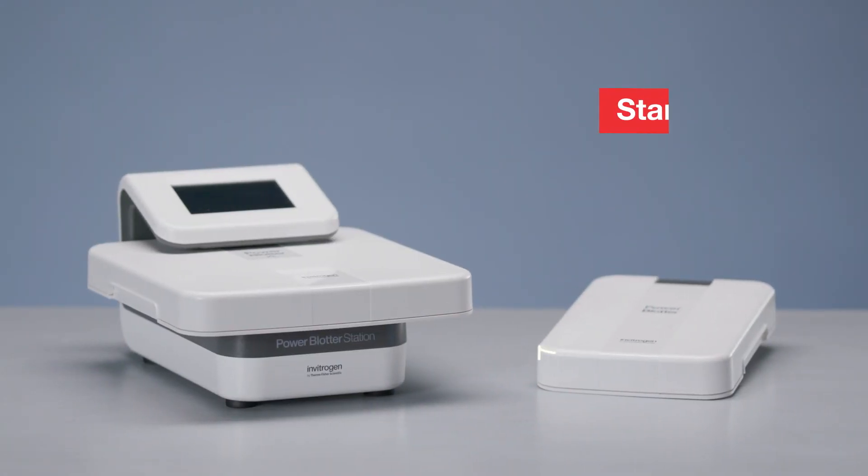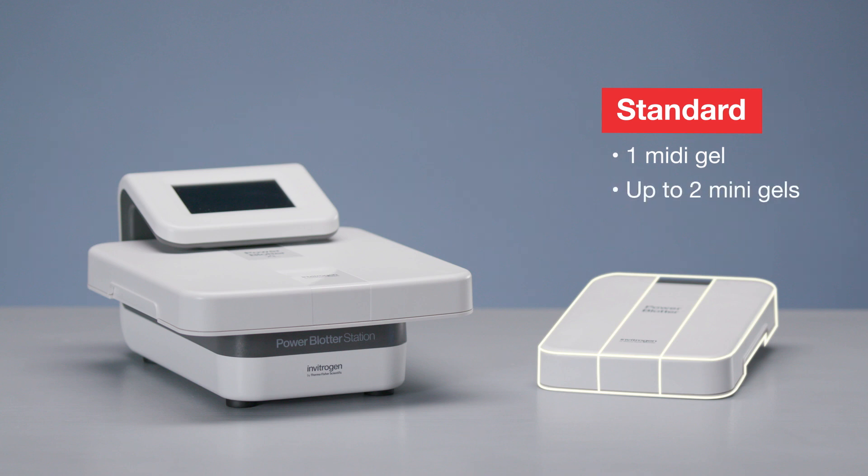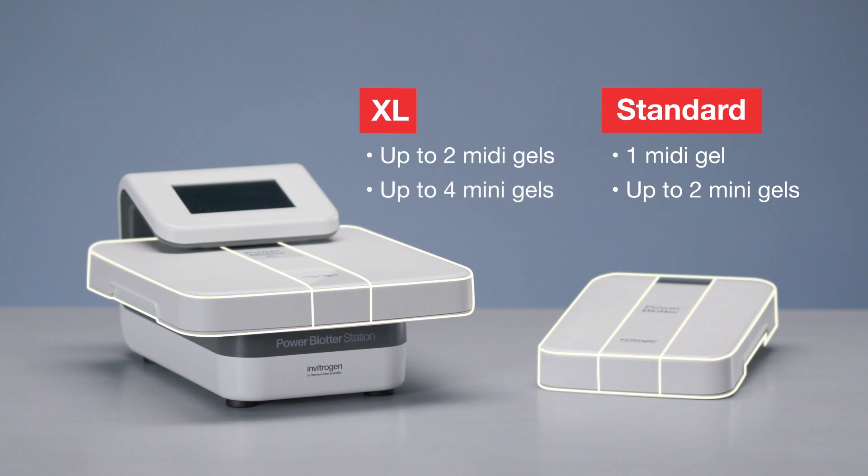The Power Blotter system has two different cassette sizes: a standard size for transferring one midi gel or up to two mini gels, or the XL cassette for transferring up to two midi gels or up to four mini gels at one time.